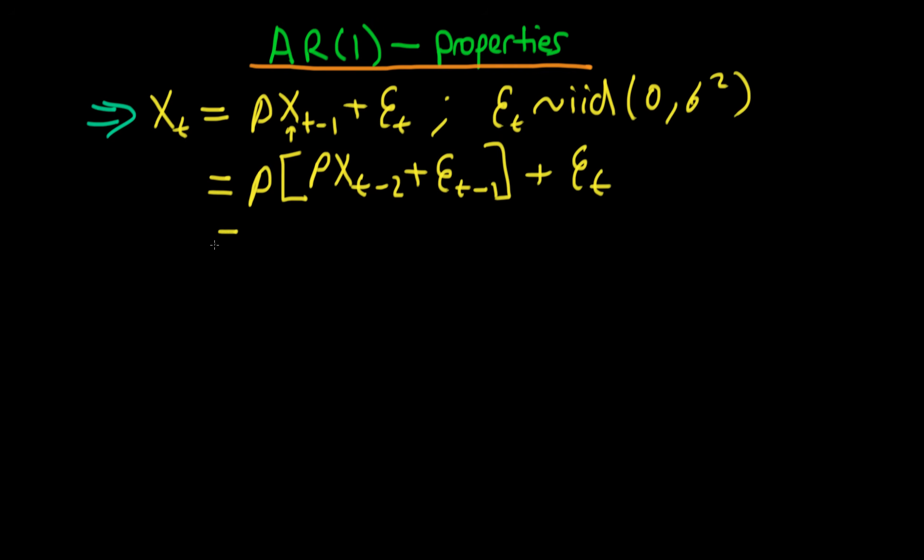And actually we could then multiply out this parenthesis and we'd get that this was ρ² times Xt-2 plus ρ times Et-1 plus Et. And if we were to continue doing this indefinitely, we would find out that Xt was equal to ρ^t times X0.